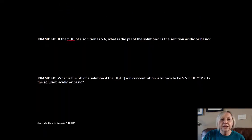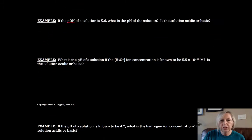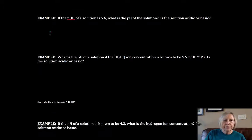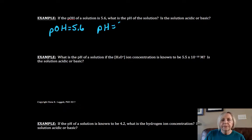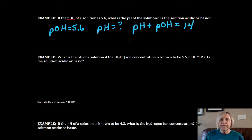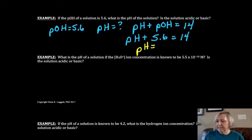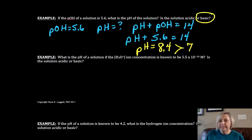Next example: pOH = 5.6 — what is the pH? Using pH + pOH = 14 at 25°C: pH + 5.6 = 14, so pH = 8.4. Since 8.4 is greater than 7, this is a basic solution.